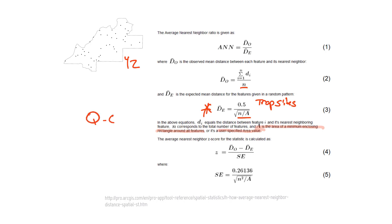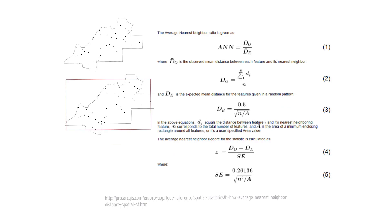In QGIS, A is going to be equal to the bounding area of the trap sites. The bounding area is a rectangle that captures the outermost north, south, east, and west points and creates a polygon. So for D sub E, we're going to calculate the area of this bounding box and use the sample size, which again is the trap sites.